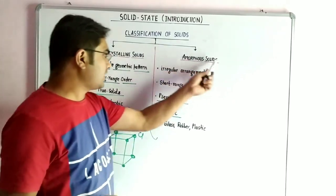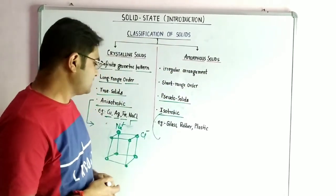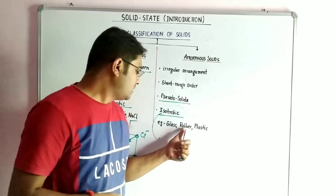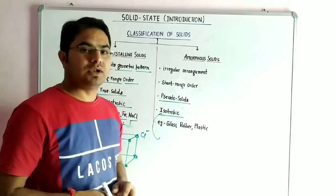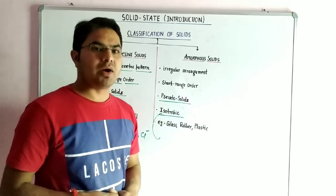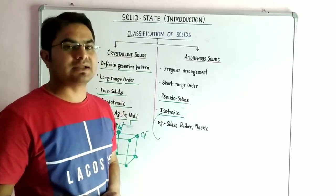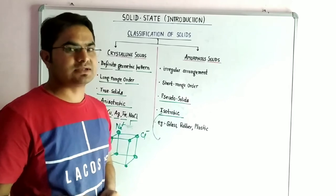While in the case of amorphous solids, these are rubber, glass, plastic which do not have regular geometries. So this is all about the point of difference between crystalline solids and amorphous solids. Thank you.